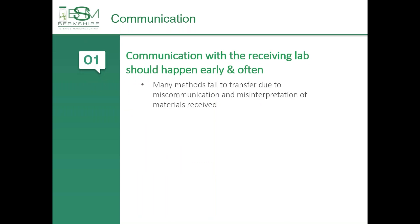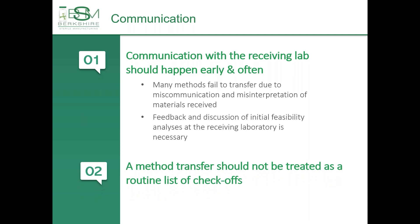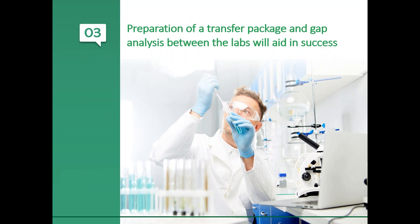Communication with the receiving lab should happen early and often. Many methods fail to transfer due to miscommunication and misinterpretation of the method instructions received — this is at the root of the most common issues. For example, a method may require the analyst to prepare a one ppm solution, but it is not defined as either gravimetric or volumetric solution preparation, which may cause differences in the receiving laboratory's results. Feedback and discussion of initial feasibility analyses at the receiving laboratory is necessary. A method transfer should not be treated as a routine list of checkoffs. By trying to use a one-size-fits-all approach, critical details may be missed. Preparation of a transfer package from the transferring lab and a gap analysis between the labs will aid in the success of the method transfer.